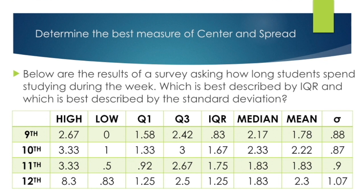Here's a table example: we asked 9th, 10th, 11th, and 12th graders how many hours per week they spend studying, and these are the results. Which can be best described by the IQR, and which by the standard deviation? The strategy here is: look at the whisker lengths and compare the mean and median. If they are equal or close, standard deviation is the best choice; if whiskers are very unequal, use IQR.